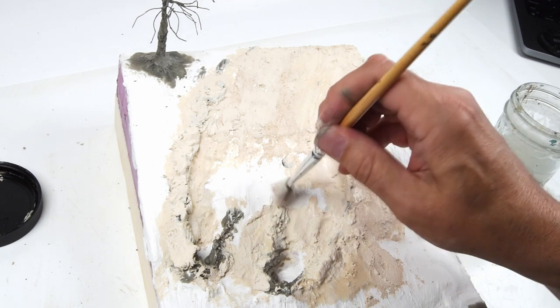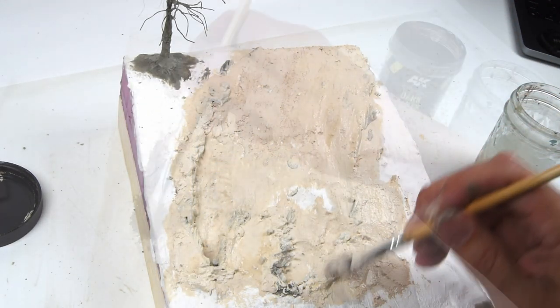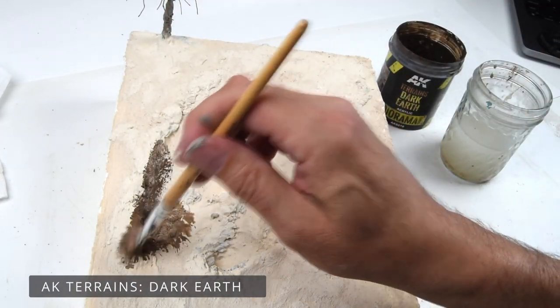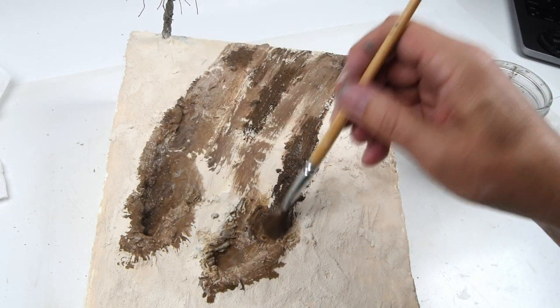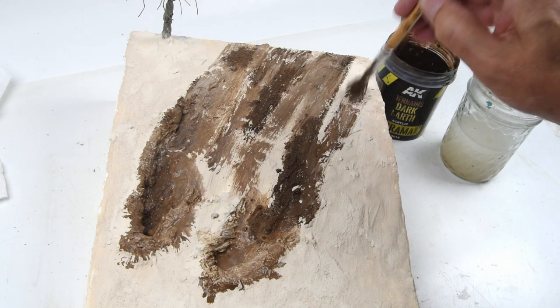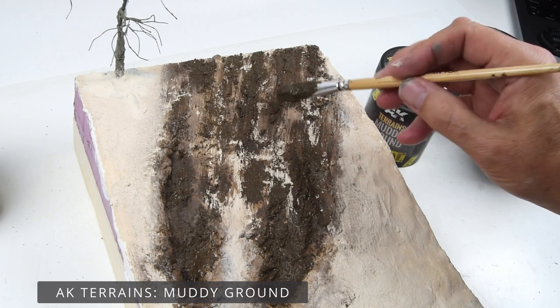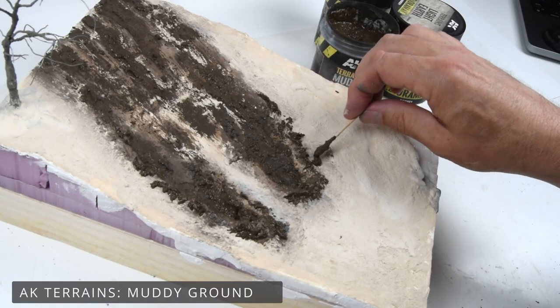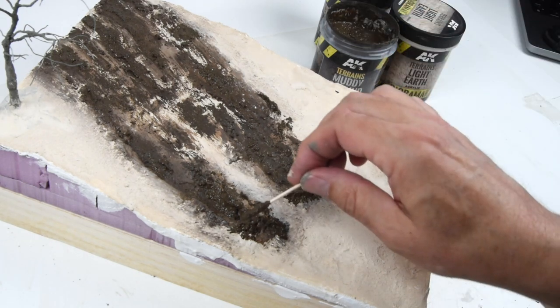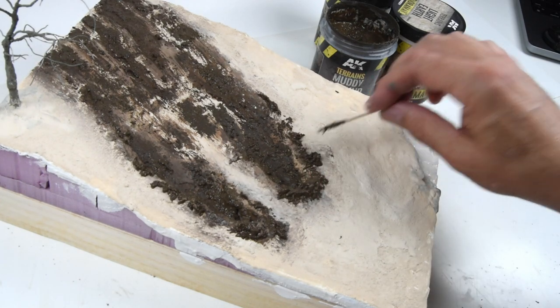I think we have all the preparation done. Now we can start kind of adding the life to the scene. So what I'm going to start working with is the AK Terrains, and this is that acrylic paste. And I'm going to do something a little bit different with this diorama that I've generally done in the past. In the past, I've usually used these pastes, and then you'll see that I airbrush over the top of them, and I paint over the top of them, and I do all sorts of things to manipulate the color. I think what I want to do on this one is just let these colors speak for themselves. So I'm not going to add any colors. This is kind of my challenge to myself. Let's see what we can do just basically out of the jar.